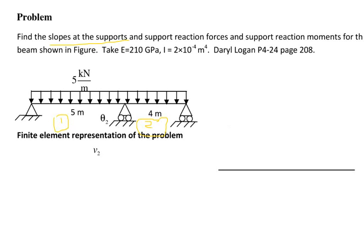This is element 1 and this is element 2. From here up to 5 meters there will be element 1, and from 5 to 9 meters there will be element 2. After discretizing these elements, we solve using FEM.